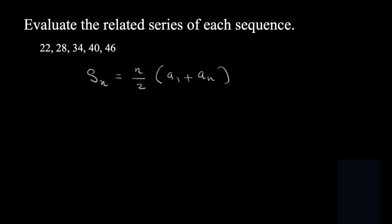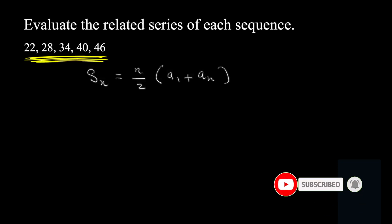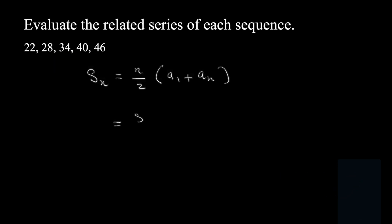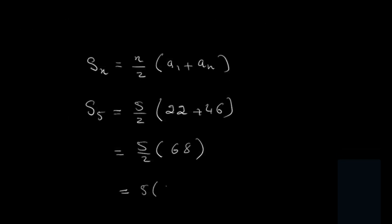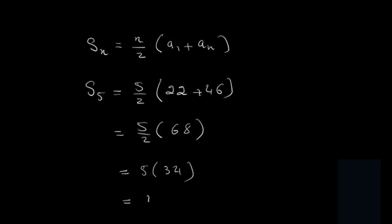Another example. Here the terms are 22, 28, 34, 40, and 46, so the number of terms is 5. We write S5 equal to 5 over 2, open bracket, a1 is 22, plus an which is 46. We write S5 because we have five terms. Simplifying: 5 over 2 into 22 plus 46 is 68. You can multiply 5 times 68 then divide by 2, or divide 68 by 2 first to get 34, and 5 times 34 is 170.